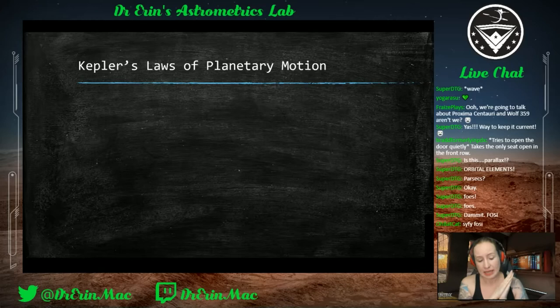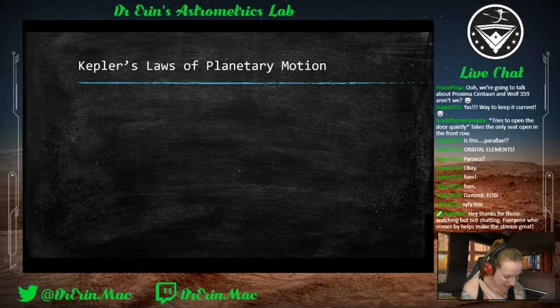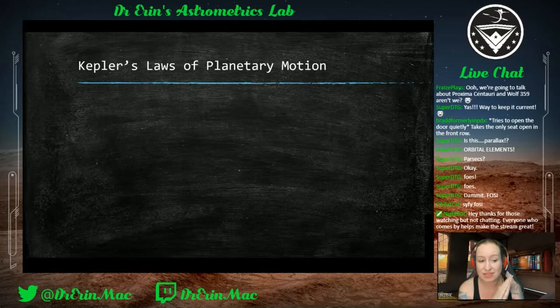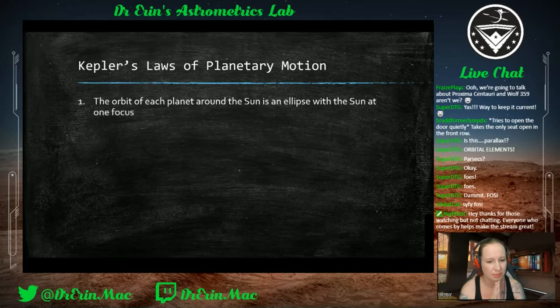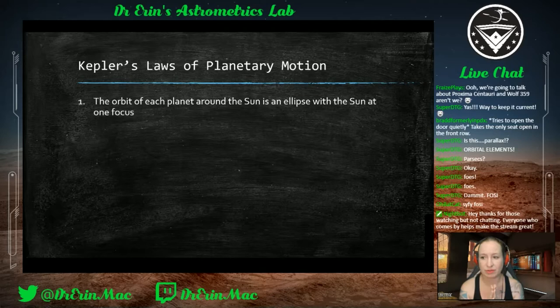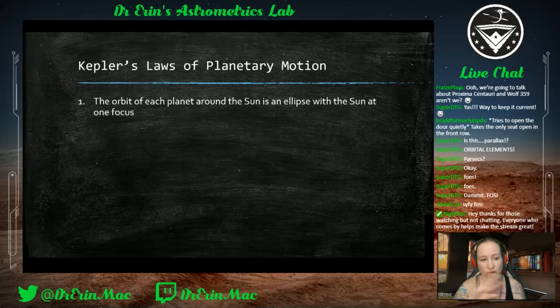From Tycho Brahe's data, Kepler developed three laws of planetary motion. It's important to remember this is about half a century before Newton's laws of gravity — this is just geometry applied to observations in space, not physics. Kepler's First Law: the orbit of each planet around the sun is an ellipse with the sun at one focus point, and nothing at the other focus point.